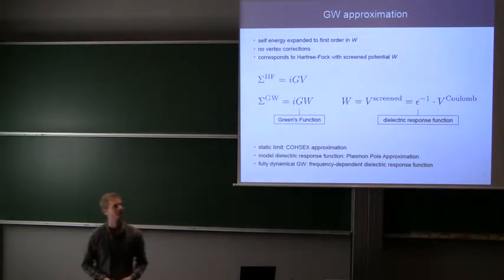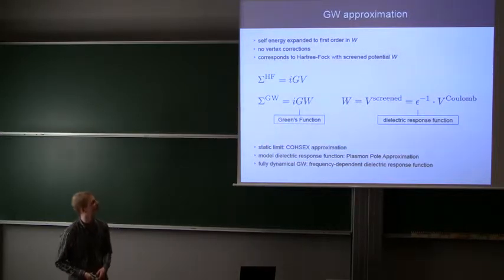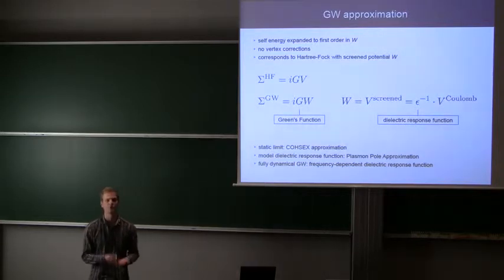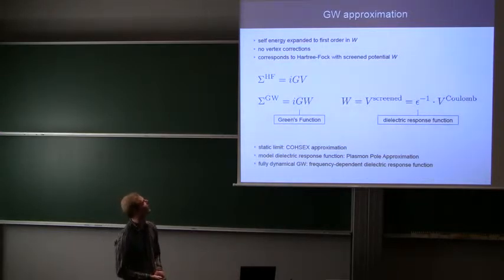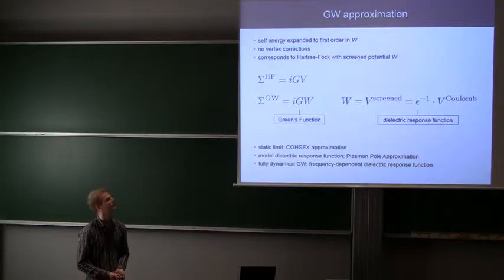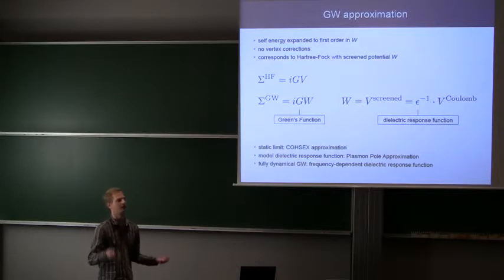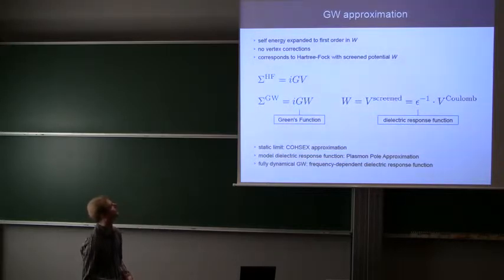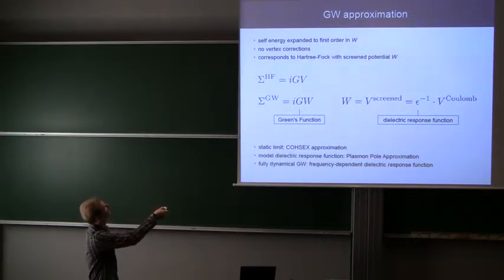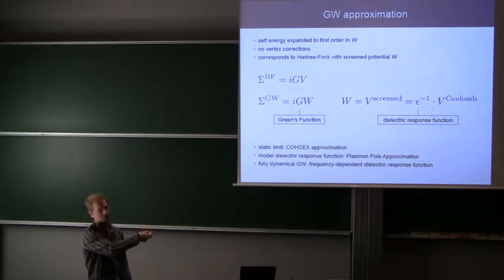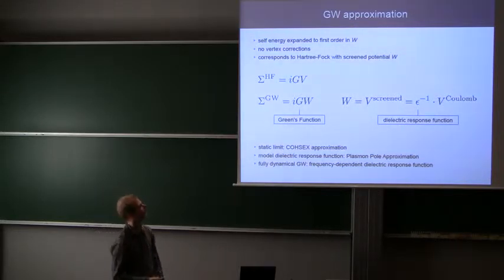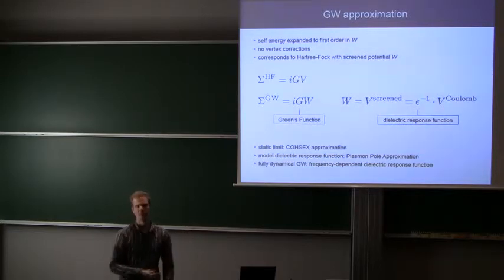So one very simple approach to the self-energy is the so-called GW approximation, which goes back to the 60s, where the self-energy is simply expanded to first order only in W, which is the screened interaction. It's not just the Coulomb interaction, but the screened version of it. What is missing in the GW approximation is what is then called vertex corrections, which are higher-order diagrams. Just to compare to give you an idea, that basically looks very similar for Hartree-Fock. The expression for the self-energy is just G times V, which is the Coulomb potential, and G is the Green's function of the system. So for GW, you simply replace the Coulomb potential by its screened version, which can simply be calculated from the inverse of the dielectric response function, which Jens talked about.